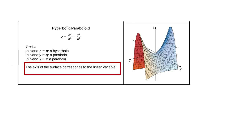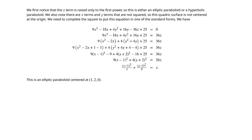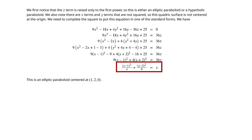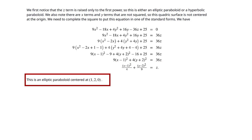The axis corresponds to the linear variable. The way to get good at understanding these surfaces is to do a lot of problems and practice drawing them on isometric paper. In this example: 9x² − 18x + 4y² + 16y − 36z + 25 = 0. We complete the square multiple times to get (x−1)²/4 + (y−2)²/9 = z. This is an elliptic paraboloid centered at (1, 2, 0). Practice these a lot and read your textbook for more examples.